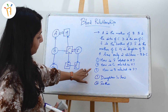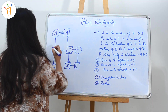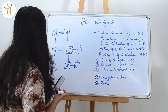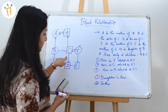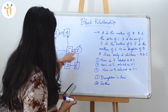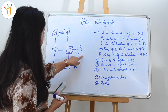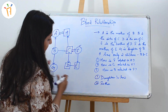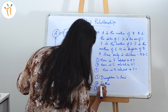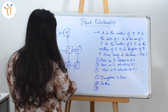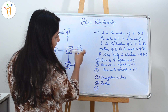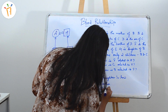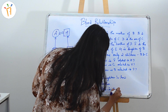Third question: how is B related to F? B is here and F is here. We know B and C are siblings, and F is the wife of C, so F will be the sister-in-law of B — or equivalently, B will be the sister-in-law of F. The answer is sister-in-law.